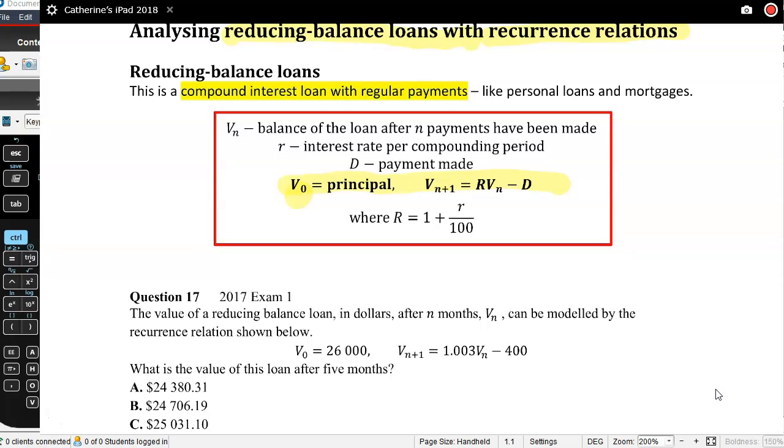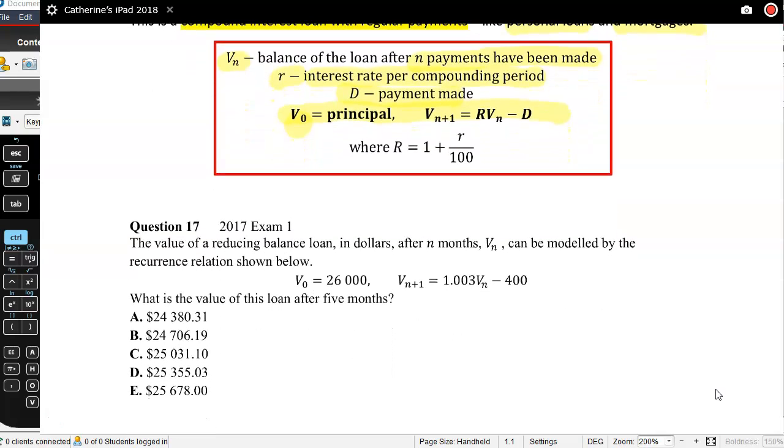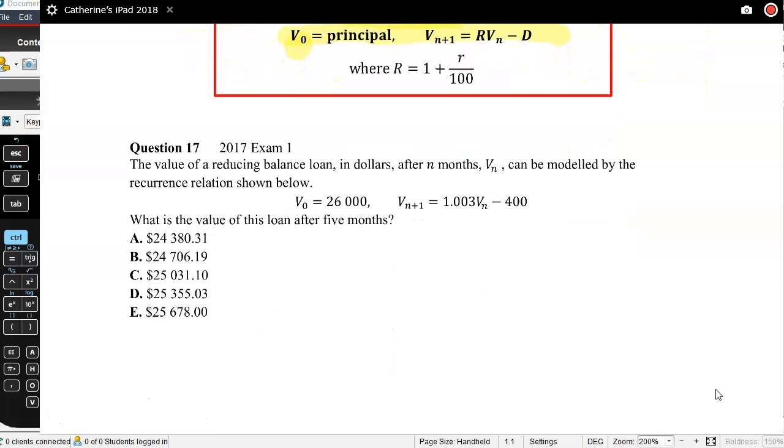So think about these things as your personal loans, mortgages. VN is the balance of the loan after N payments have been made. R is the interest rate per compounding period and D is payments made. So let's think about this using an exam question.